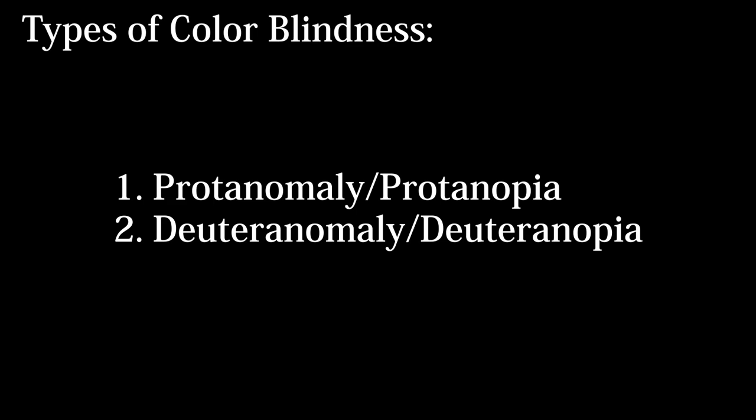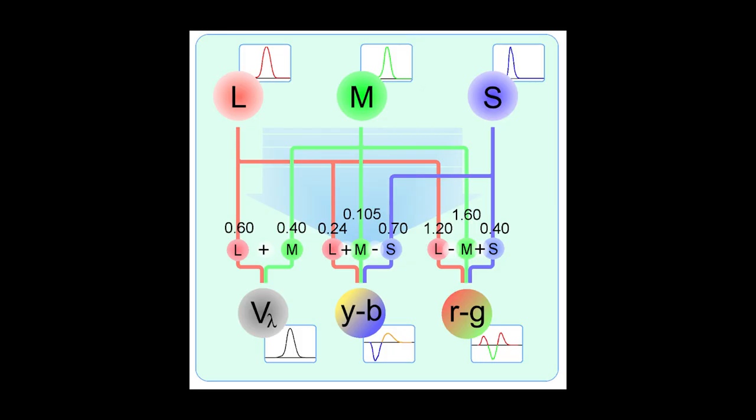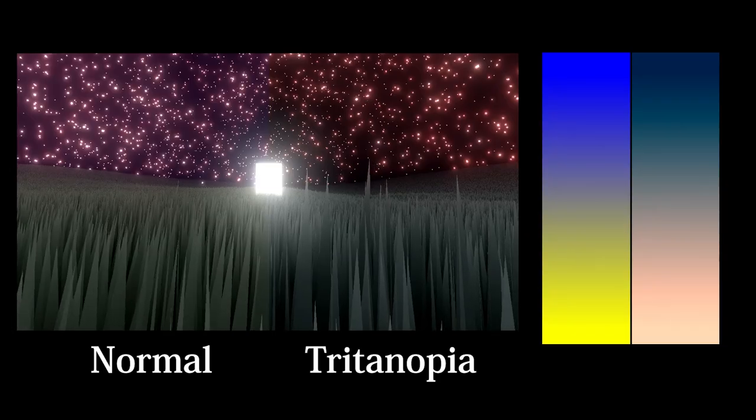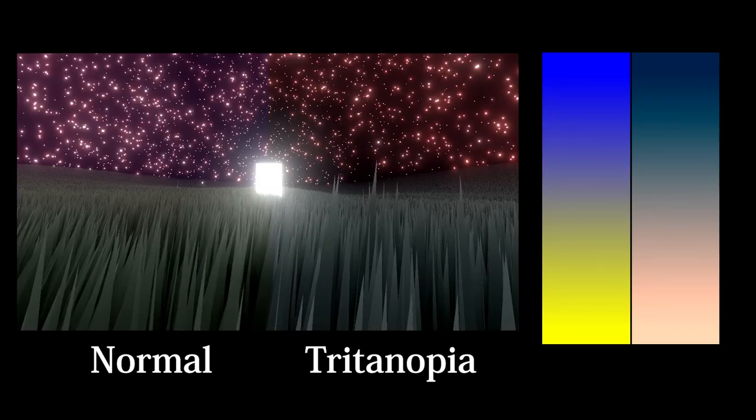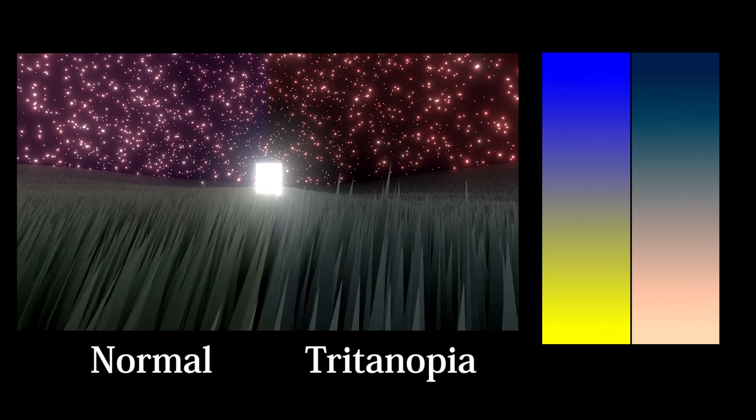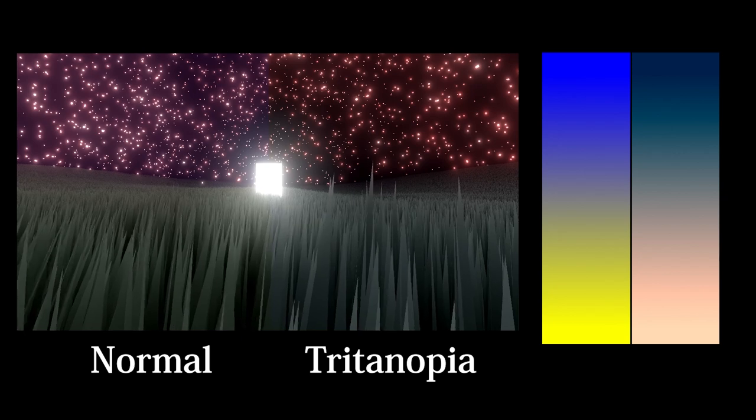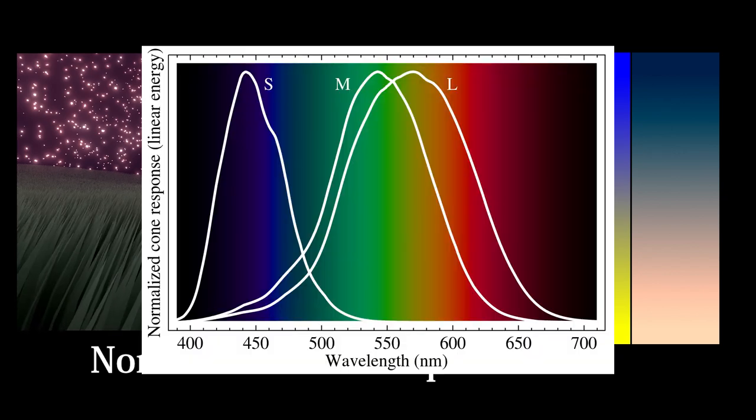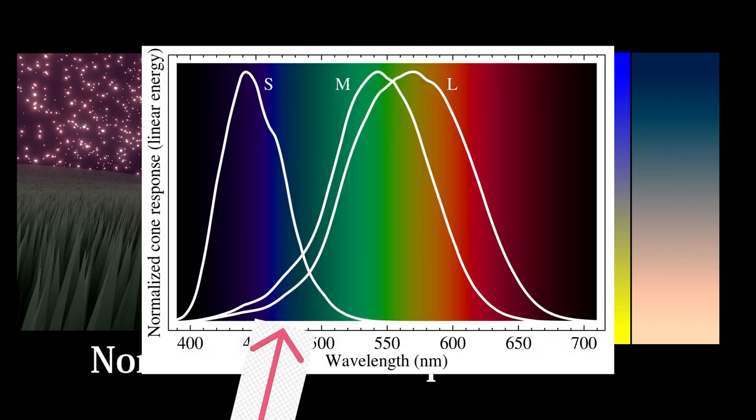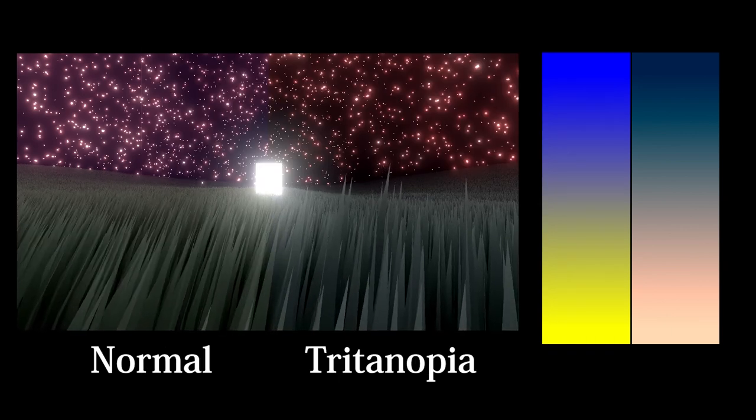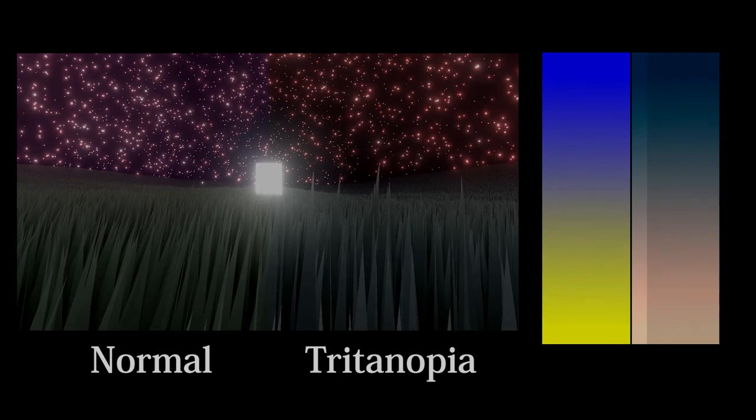The last type of colorblindness, tritanomaly, is the malfunction of the S-cone. If the S-cone is missing, it's called tritanopia and it's so rare that as far as I know there's no real statistic for it. Tritanomaly is blue-yellow colorblindness and isn't as disabling as the other two forms since the S-cone doesn't actually do all that much for your vision. Tritanopia results in blues being pushed toward green and yellows looking pinkish.